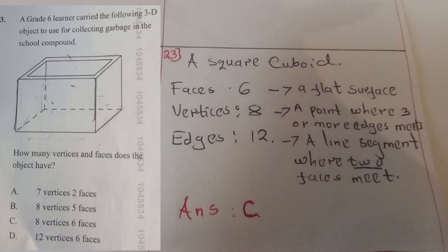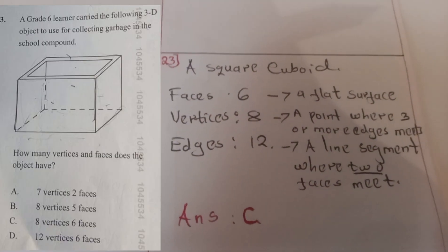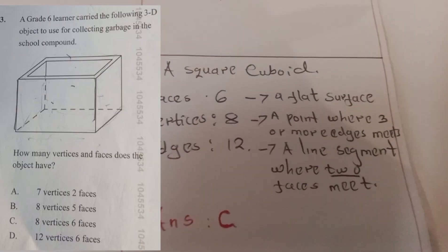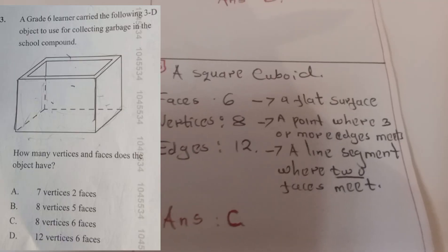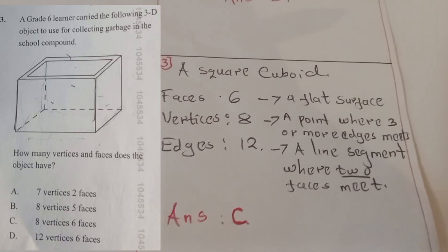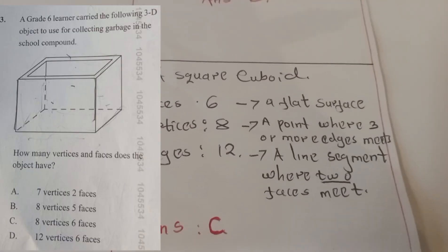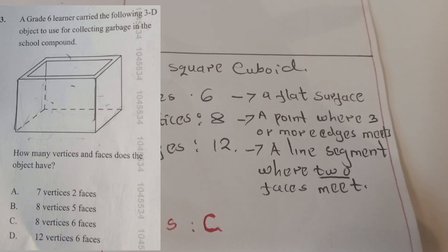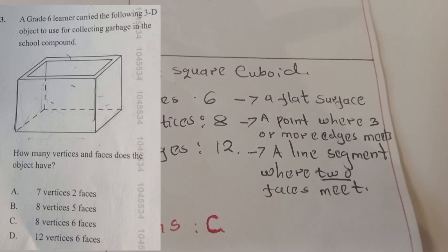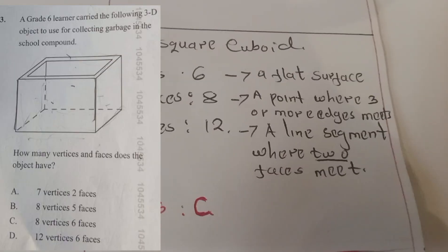Question twenty-three: a Grade 6 learner brought a 3D object — a square cuboid — to collect garbage in the school compound. A square cuboid has 6 faces (flat surfaces), 8 vertices (points where three or more edges meet), and 12 edges (line segments where two faces meet). The correct answer was C.